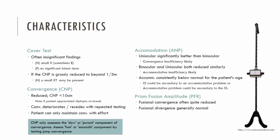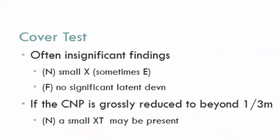Firstly, the cover test. Patients often have an exophoria, though not always, and it usually is of an insignificant amount. However, if the convergence near point is very remote, you may find an exotropia at near, giving a convergence weakness exo-deviation — an exo-deviation that is greatest at near compared to distance, because convergence is more required at near.